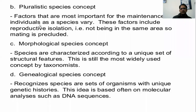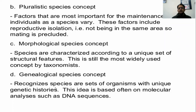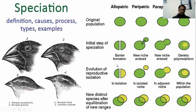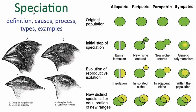The pluralistic species concept considers factors most important for the maintenance of individuals as a species, including reproductive isolation and not being in the same area so mating is precluded. The morphological species concept creates a unique set of morphological features. The genealogical species concept recognizes species as sets of organisms with unique genetic histories.